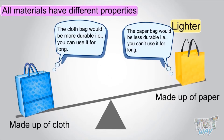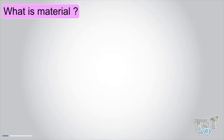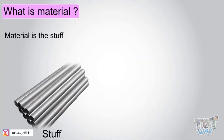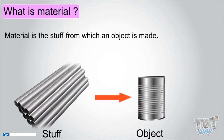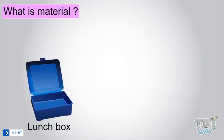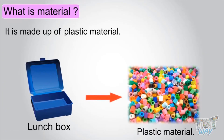So, different objects can be made of different materials, and different materials have different properties. What is material? Material is the stuff from which an object is made. Like, what is the material of this lunchbox? It is made of plastic material.